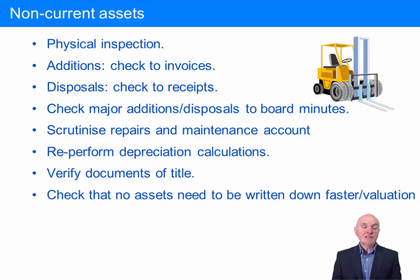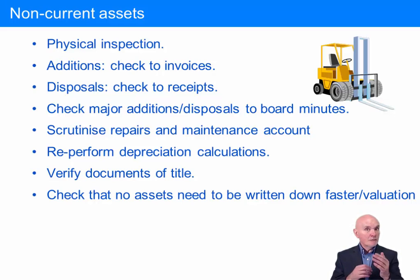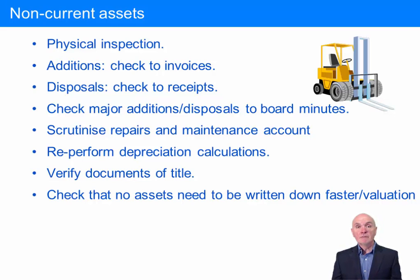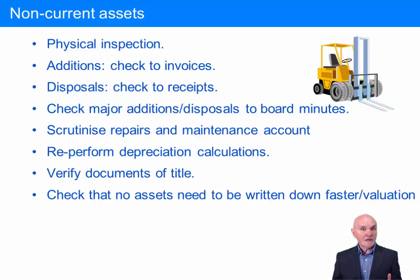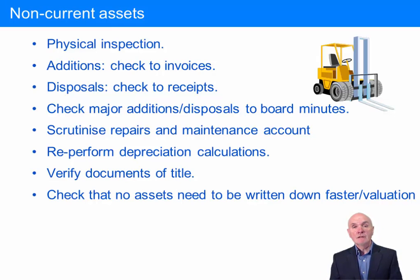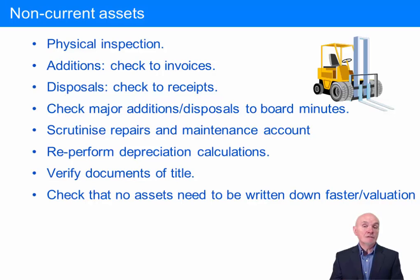Additions need to be looked at. Non-current assets will often have fewer movements during the year compared to purchases of raw material, but quite often whatever movements there are are going to be fairly material. Buying new machinery, new vehicles, new computer equipment and so on is likely to be prima facie material and could lead to material misstatements.